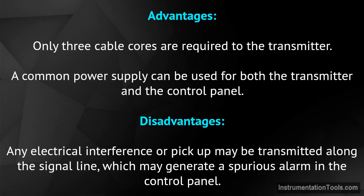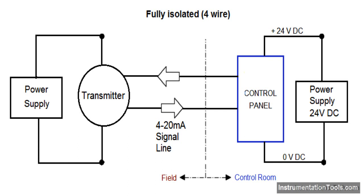A common power supply can be used for both the transmitter and the control panel. Disadvantages: any electrical interference or pickup may be transmitted along the signal line, which may generate a spurious alarm in the control panel.